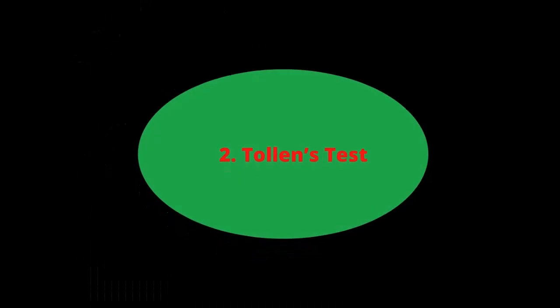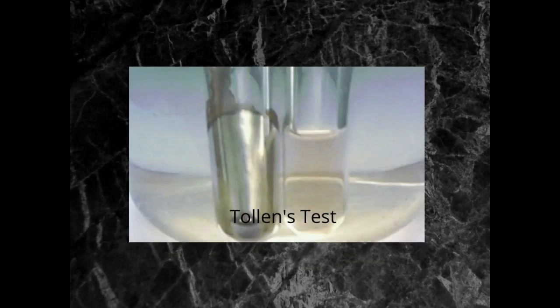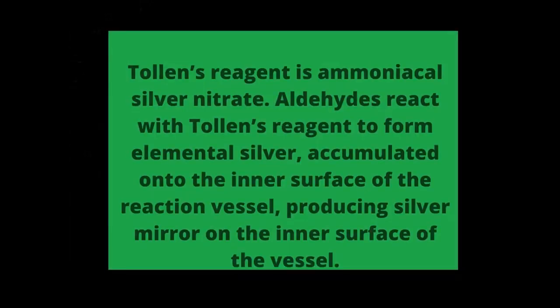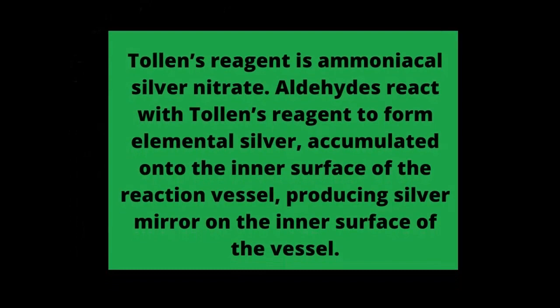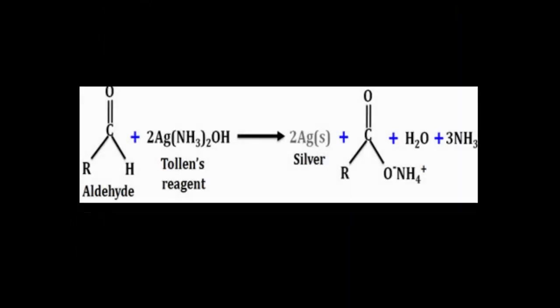The Tollens' reagent test uses ammoniacal silver nitrate solution. When Tollens' reagent is added to aldehydes, the aldehydes are oxidized to carboxylic acid. In this process, the silver ions are reduced to metallic silver, and the silver precipitate is deposited on the walls of the test tube, forming a silver mirror.